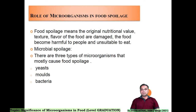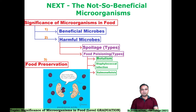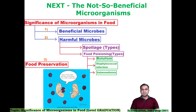This is all about the beneficial aspects of microorganisms. Our next topic will be the role of microorganisms in food spoilage — that will form the next part of my discussion. The whole syllabus is divided into three lectures: today we saw the significance of microorganisms in food — the beneficial microbes. The second aspect is harmful microbes, and the third topic is food preservation, which will preserve the beneficial microbes and not allow the harmful microbes to come. In our next lecture we will be seeing the harmful microbes, spoilage types, food poisoning types etc.